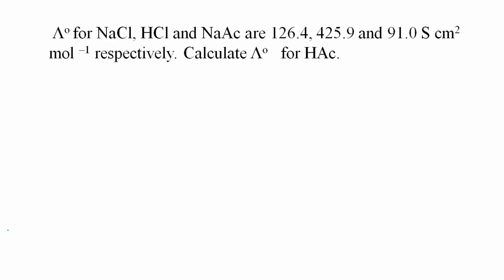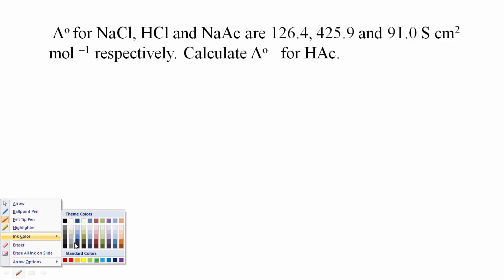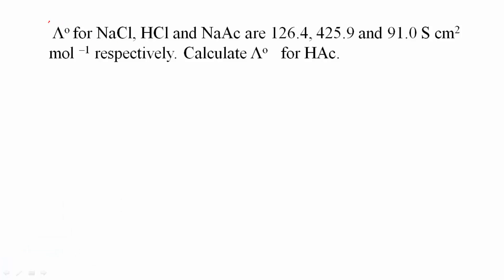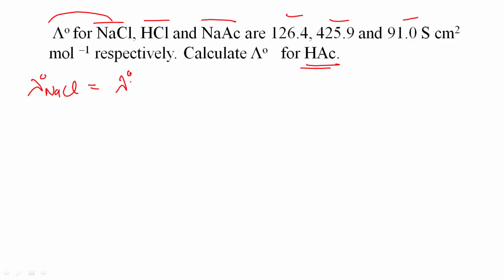Now let's look at a problem to understand this law more correctly. The limiting molar conductivities of NaCl, HCl, and sodium acetate are given respectively, and we have to find the limiting molar conductivity of acetic acid. Limiting molar conductivity of NaCl equals limiting molar conductivity of Na⁺ plus Cl⁻, which is given as 126.4.